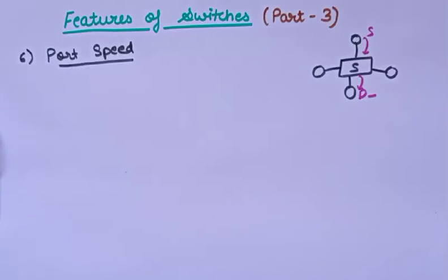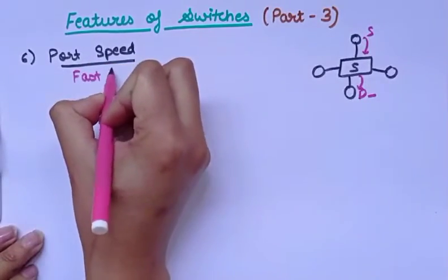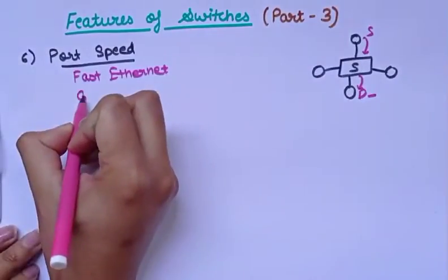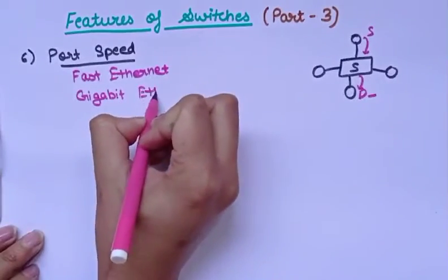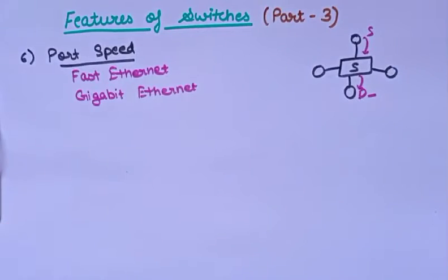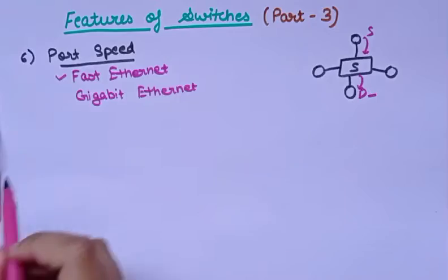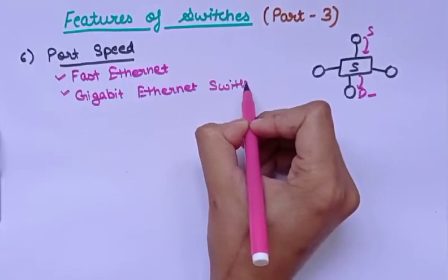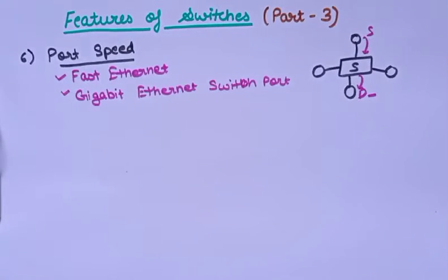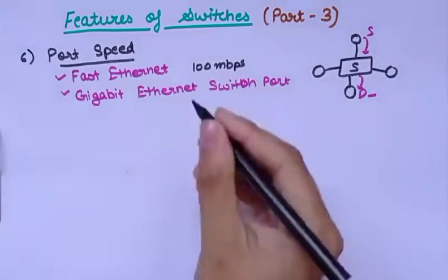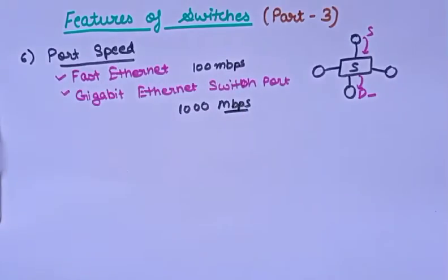This is another important feature of switches. We can use the port depending on performance requirements. There are different types of ports — one is the Fast Ethernet port and another is the Gigabit Ethernet switch port. For Fast Ethernet it allows up to 100 Mbps of traffic per switch port, while Gigabit Ethernet allows 1000 Mbps of traffic per switch port.